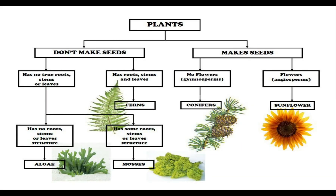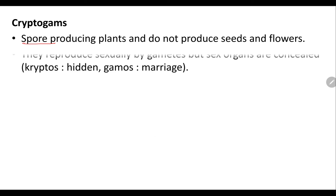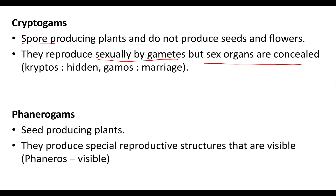This is how we have studied about the plants. There are cryptogames which do not produce seeds, and phanerogames which produce seeds. Cryptogames do not produce seeds but they produce spores, and this is how the life cycle is completed. Their reproductive parts reproduce sexually by gametes, but sex organs are completely hidden. In phanerogames, these are the seed-producing plants, and the reproductive parts present are completely visible.